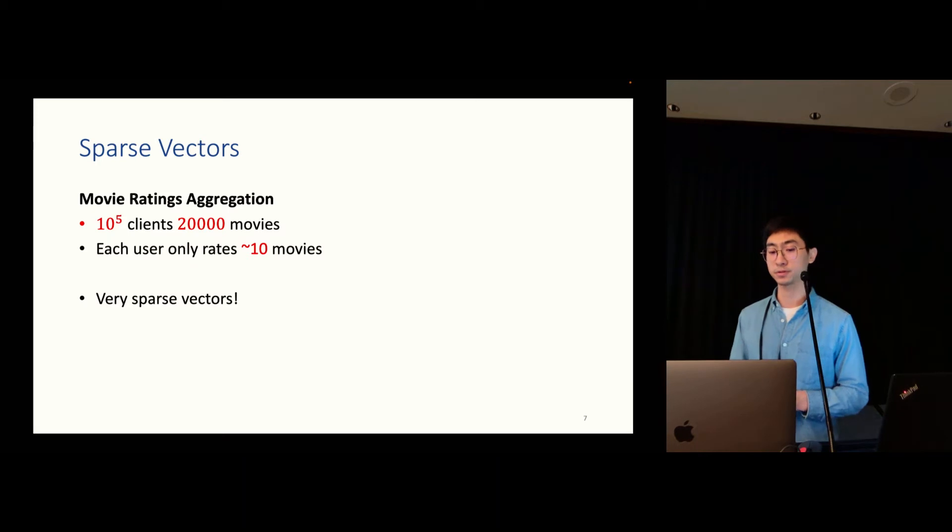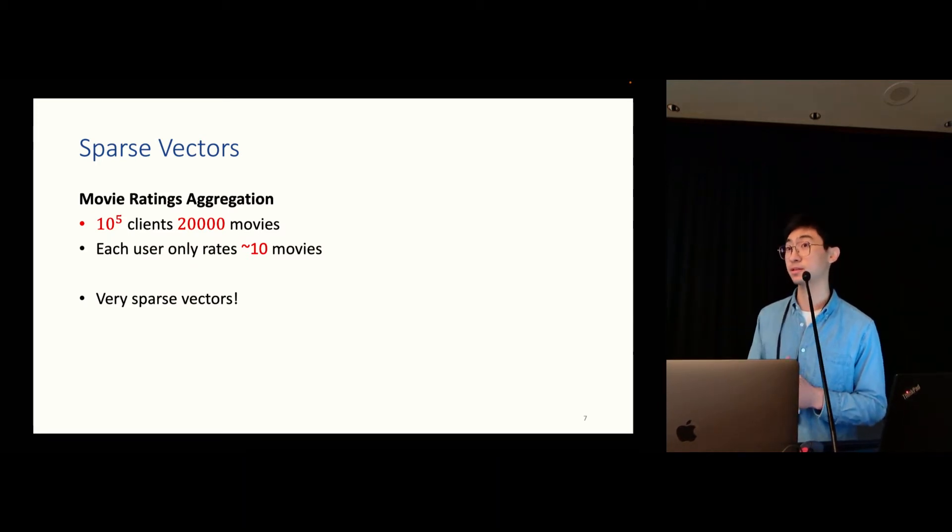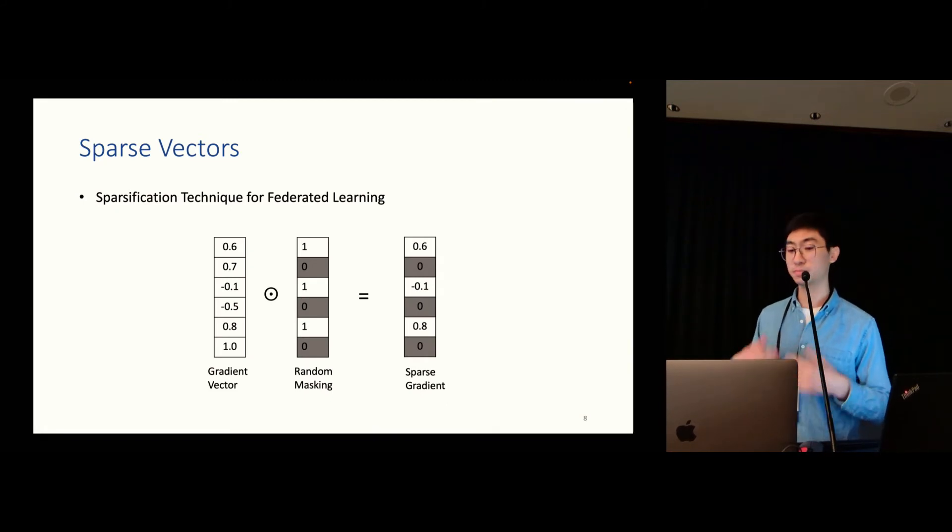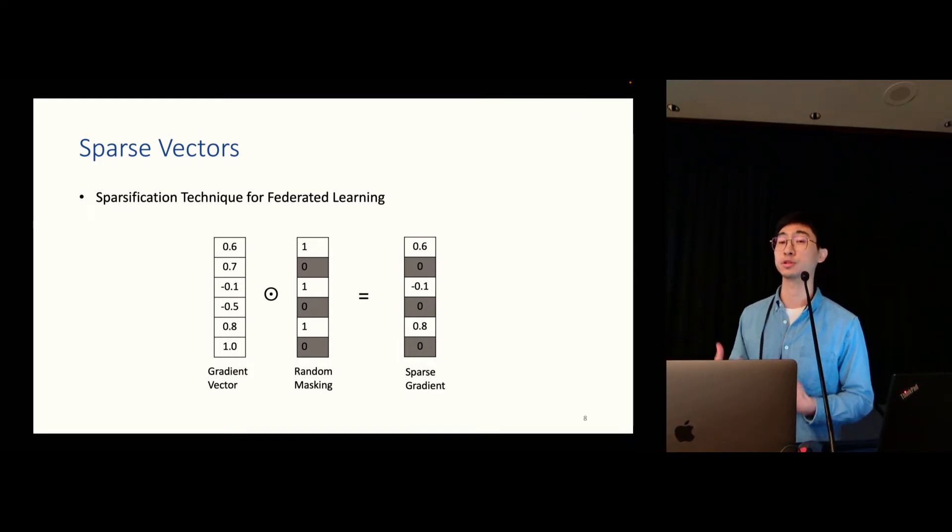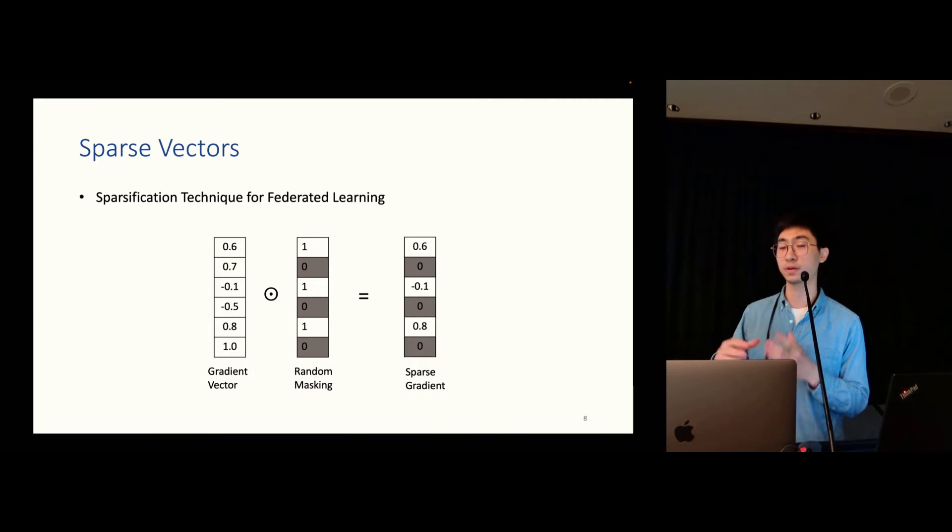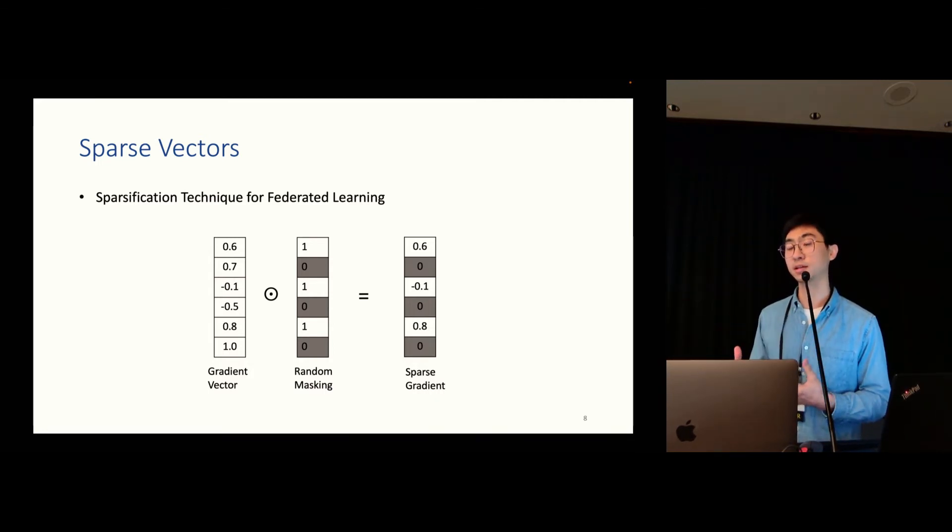In our paper we focus on sparse vectors. So let's say we have a movie rating aggregation task, such that we are aggregating the user's rating to those movies. And let's say we have 10 to the 5 clients and 20,000 movies, and each user will only rate about 10 movies, something like that. And if we compile each user's rating to all those movies, the vector could be very, very sparse. Another great example is the sparsification technique for federated learning. In federated learning, the user will update their local gradient to the central server for some machine learning training. But here, when they update their gradient vector to the server, they will apply a random masking to zero out some of the coordinates in the vector. And their gradient now is very, very sparse. And previous papers have shown that with this technique, the client could save a lot of communication cost, while the central server can still train a pretty good machine learning model.